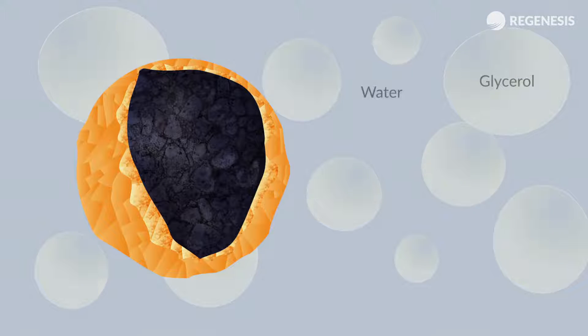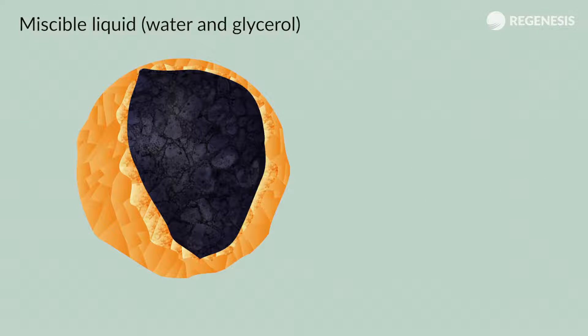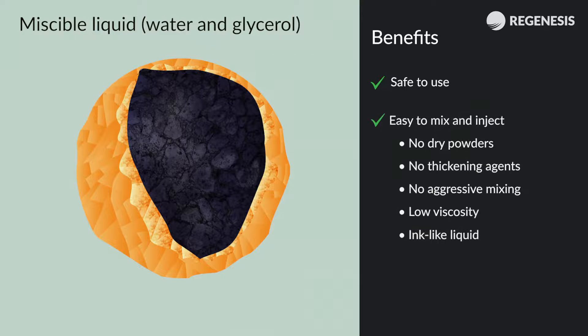The sulfidated zero-valent iron colloids are suspended in a solution of water and glycerol. The resulting liquid is safe and easy to apply, and provides both abiotic and biological reduction of the contamination.